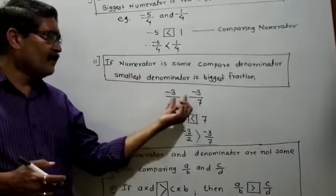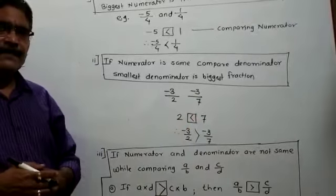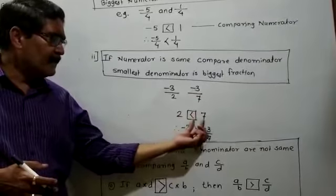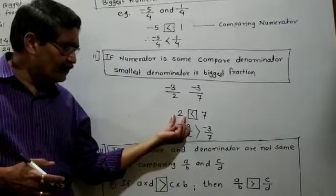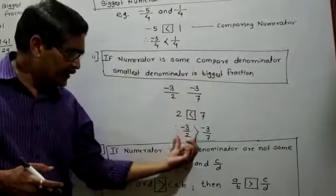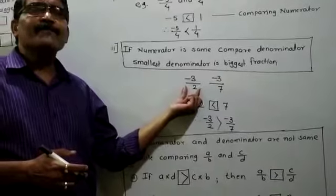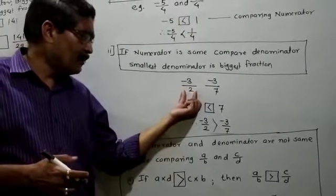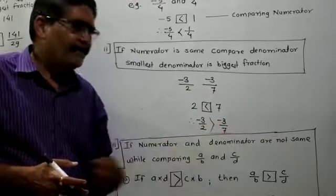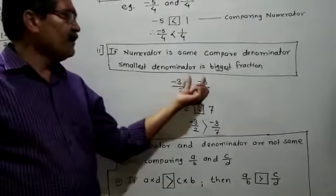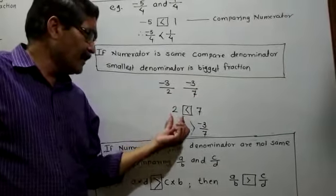Here you have to compare 2 and 7 because the numerator is the same. Is 2 bigger or is 7 bigger? 7 is bigger, but the rule says the smallest denominator is the biggest fraction — so denominator 2 is the smallest, meaning that fraction is greater. Therefore, -3/2 is greater than -3/7. When the numerator is the same, compare the denominator — the smallest denominator is the biggest fraction.